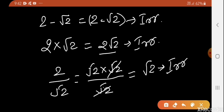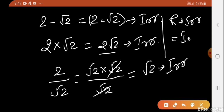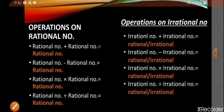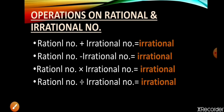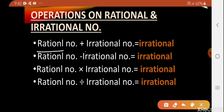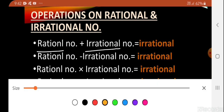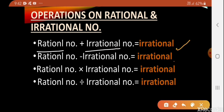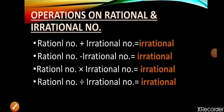So if you perform any of these operations between a rational and an irrational number, the result will always be irrational. That's all for today. I hope it is clear to everyone. If you like the session, do like, share, and subscribe. Good day!